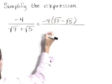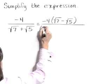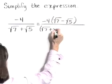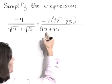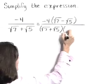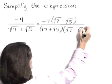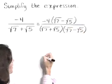So multiply the numerator by that quantity and the denominator. The square root of 7 plus the square root of 5 times the square root of 7 minus the square root of 5 down there as well.